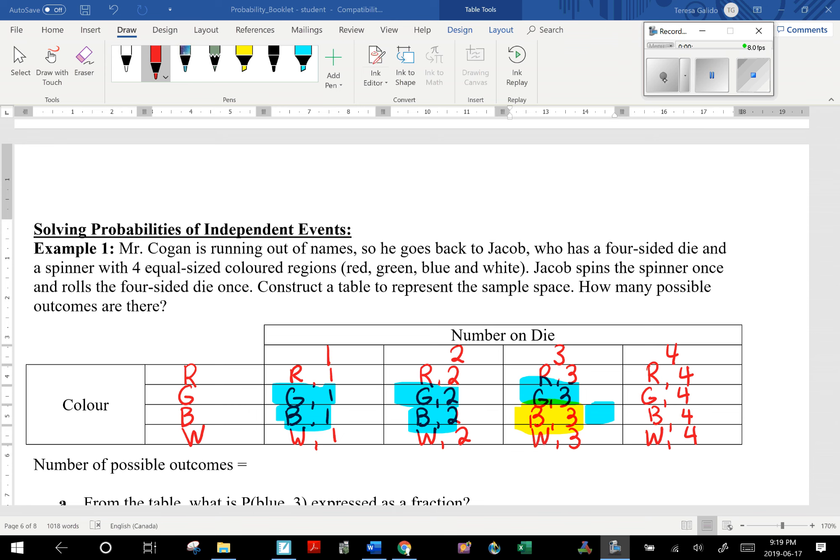So here, the number on the die is 1, 2, 3, 4, and then the color—they're equally sized regions. So one-fourth would be red, green, blue, and white.